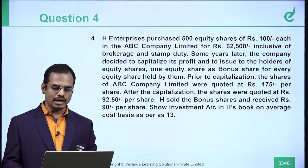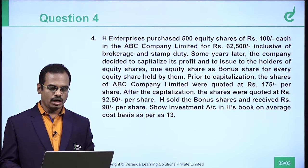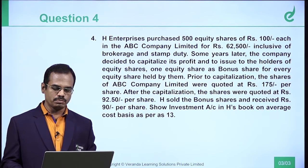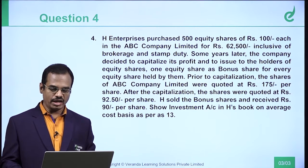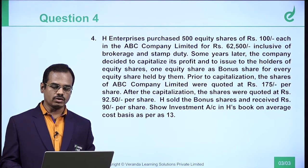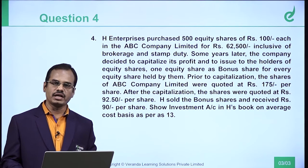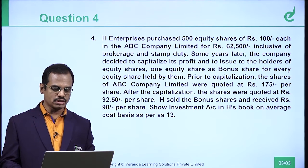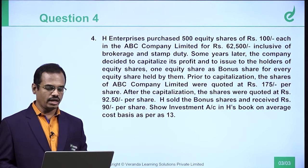The company decided to capitalize its profit and issue to the holders of equity shares one equity share as bonus for every equity share held by them. Prior to capitalization, the shares of ABC Limited were quoted at Rs. 175 per share. After the capitalization, the shares were quoted at Rs. 92.5 per share. H-Enterprises sold the bonus shares and received Rs. 90 per share.